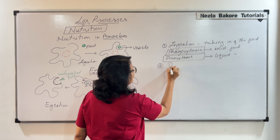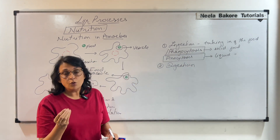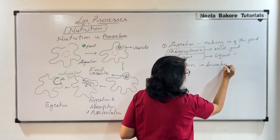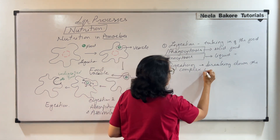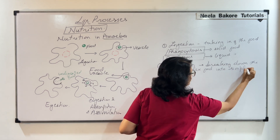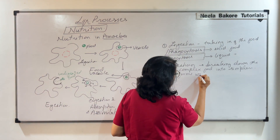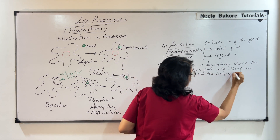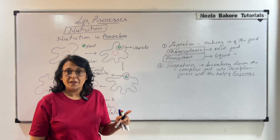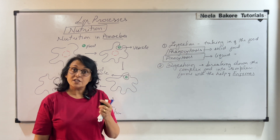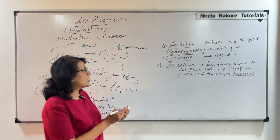Step number two is digestion. Digestion is the breaking down of complex molecules into simpler ones — breaking down complex food into simpler forms. This process is done with the help of enzymes. For example, we have enzymes in our saliva such as salivary amylase; in our stomach we also produce various enzymes. Similarly, these unicellular organisms also have many enzymes.